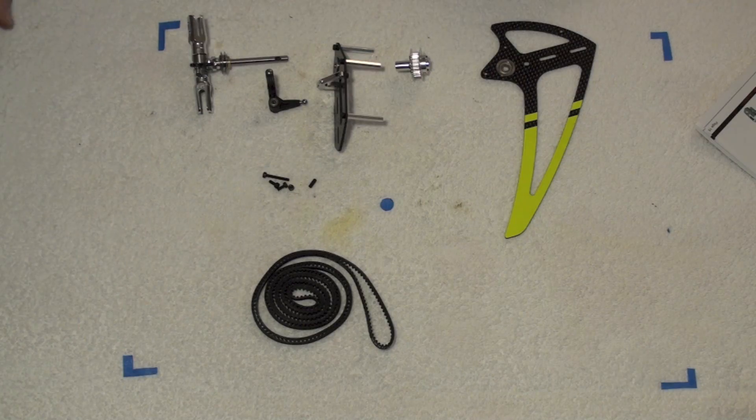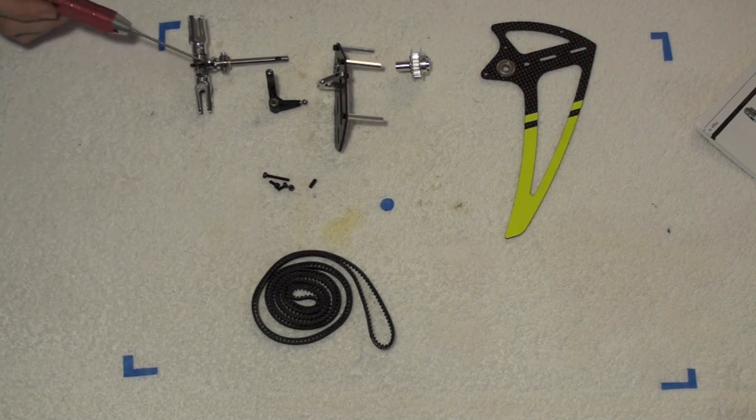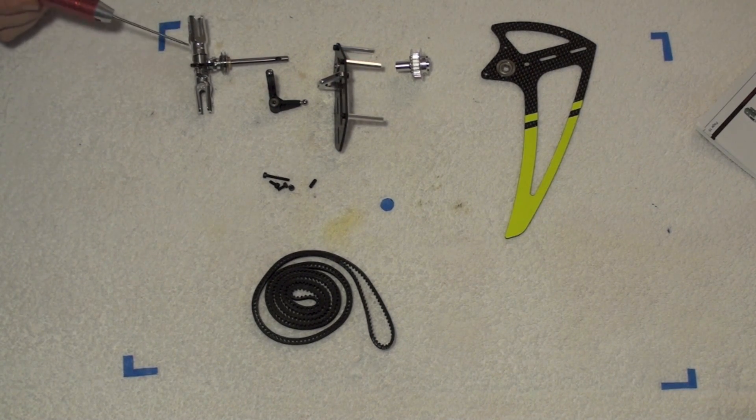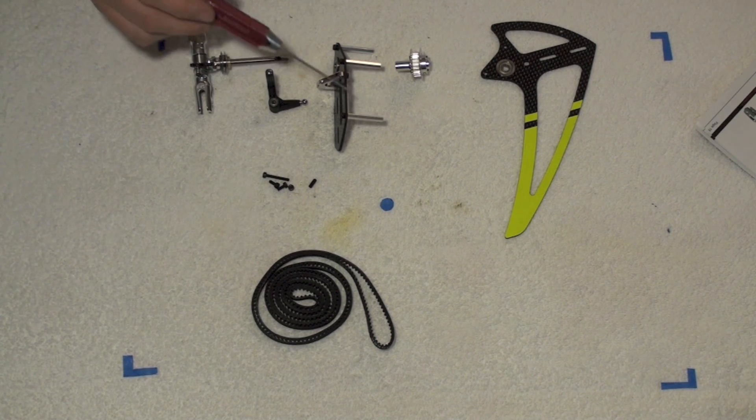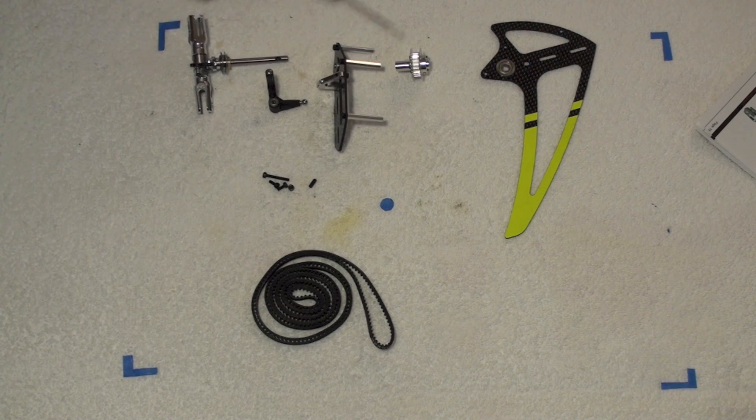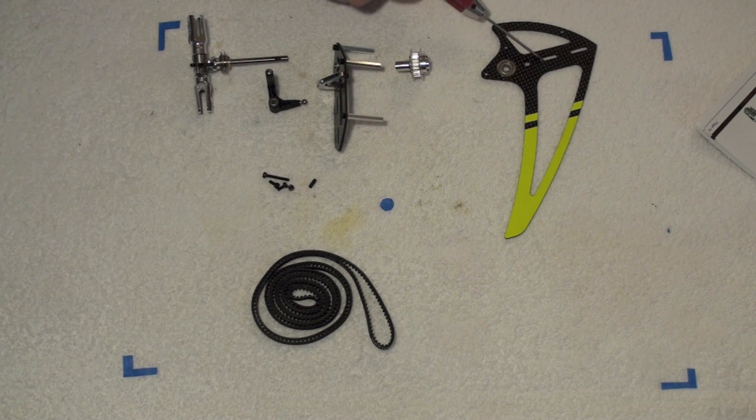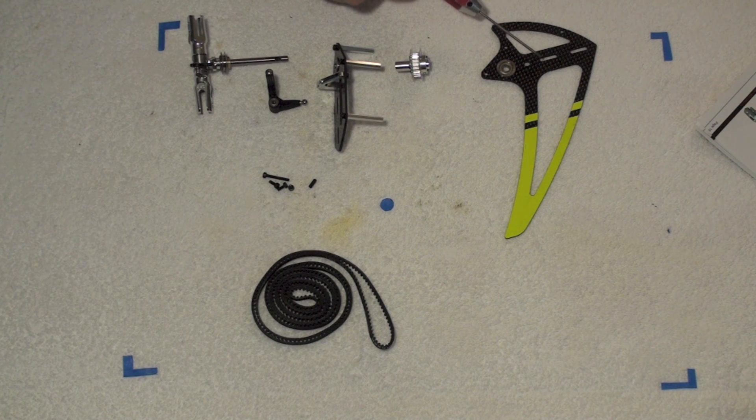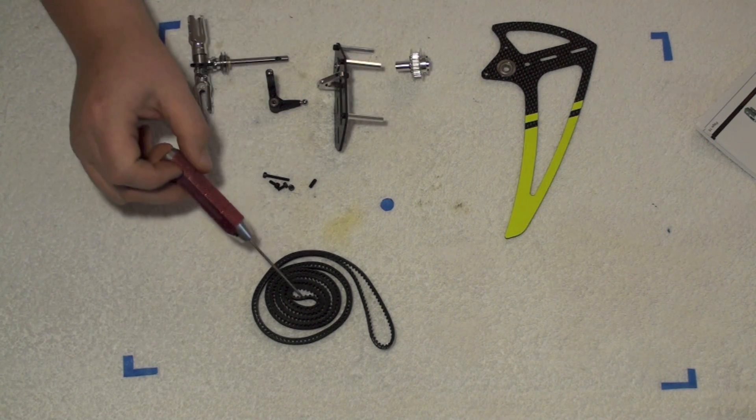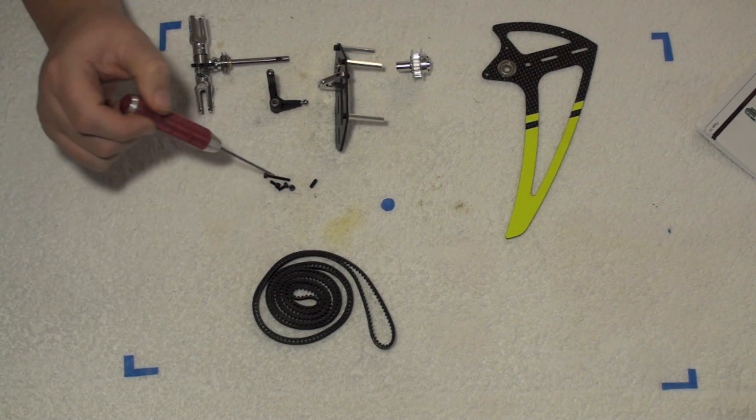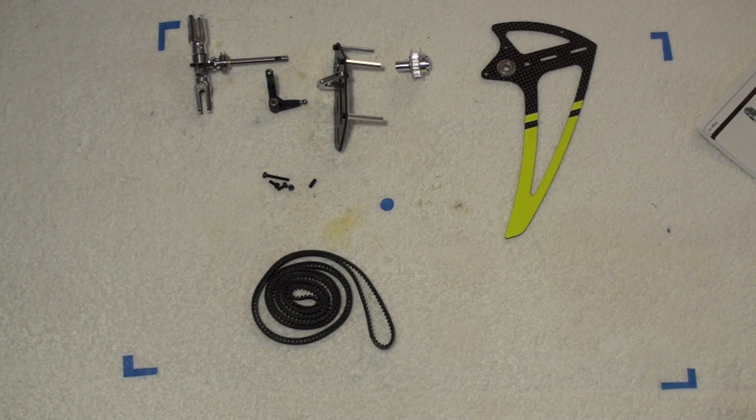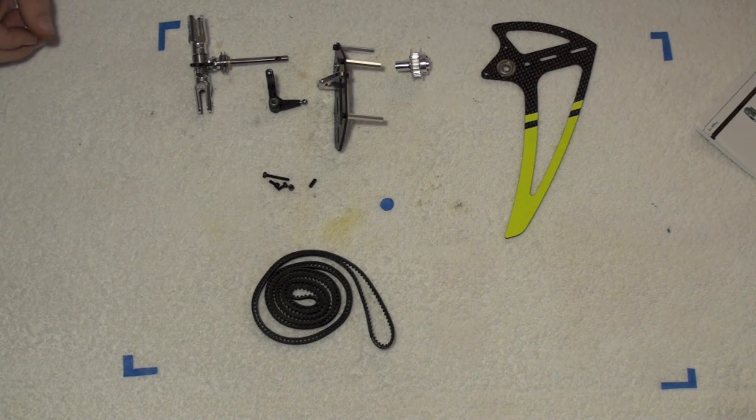So now we're going to finish getting the tail assembly together. We got our tail rotor output shaft, tail rotor blade grips, our bell crank, our side plate assembly, our 21-tooth tail pulley, our vertical fin and our belt, along with the miscellaneous nuts and bolts. We will start assembling that and then we'll look at everything when we're done.